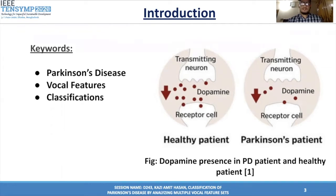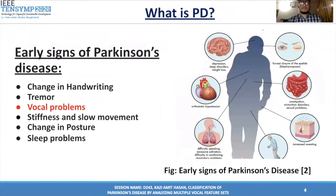Parkinson's Disease is a growing and chronic neurodegenerative disease with a great amount of motor and non-motor symptoms. It is caused by early death of dopamine in our brains. In this figure, we can see the difference in dopamine presence between healthy and Parkinson's patients. There are some early signs of PD, like change in handwriting, tremor, vocal problems — which we have used in this paper — stiffness, slow movements, changing posture, and sleeping problems.